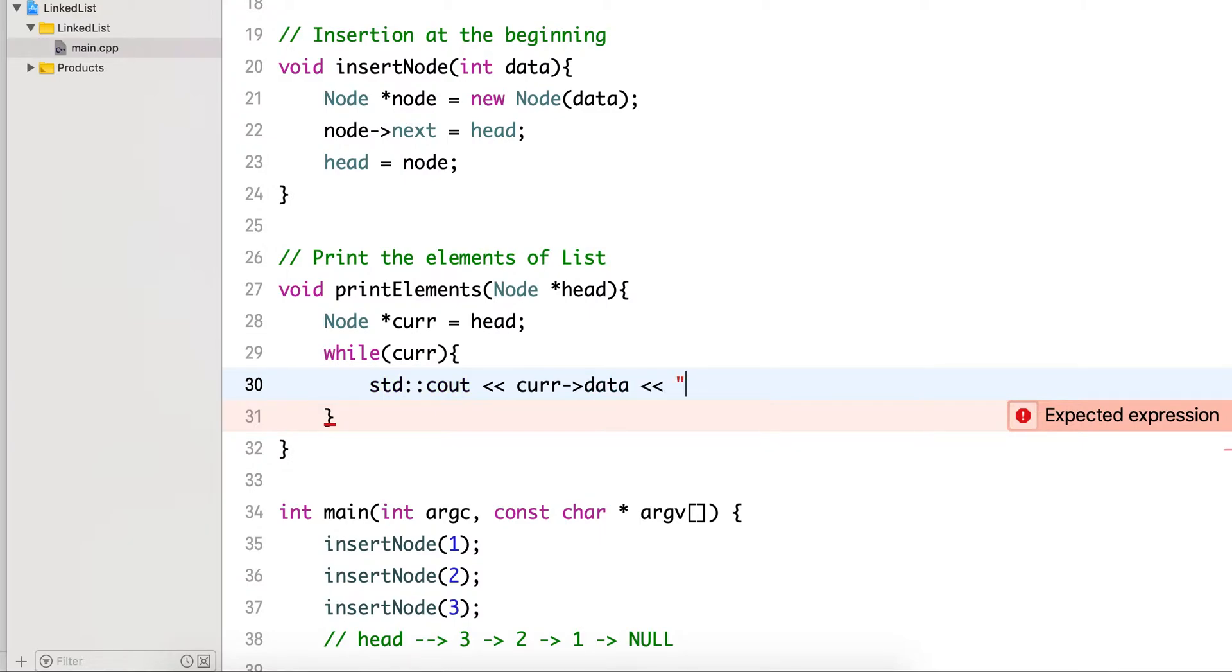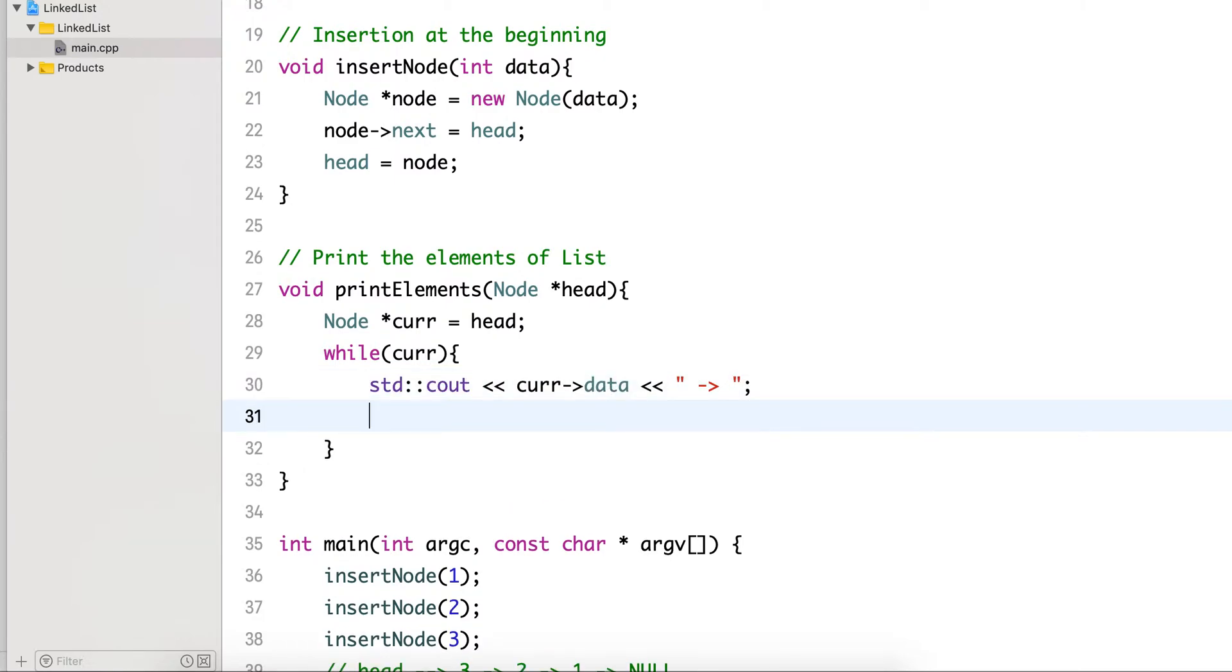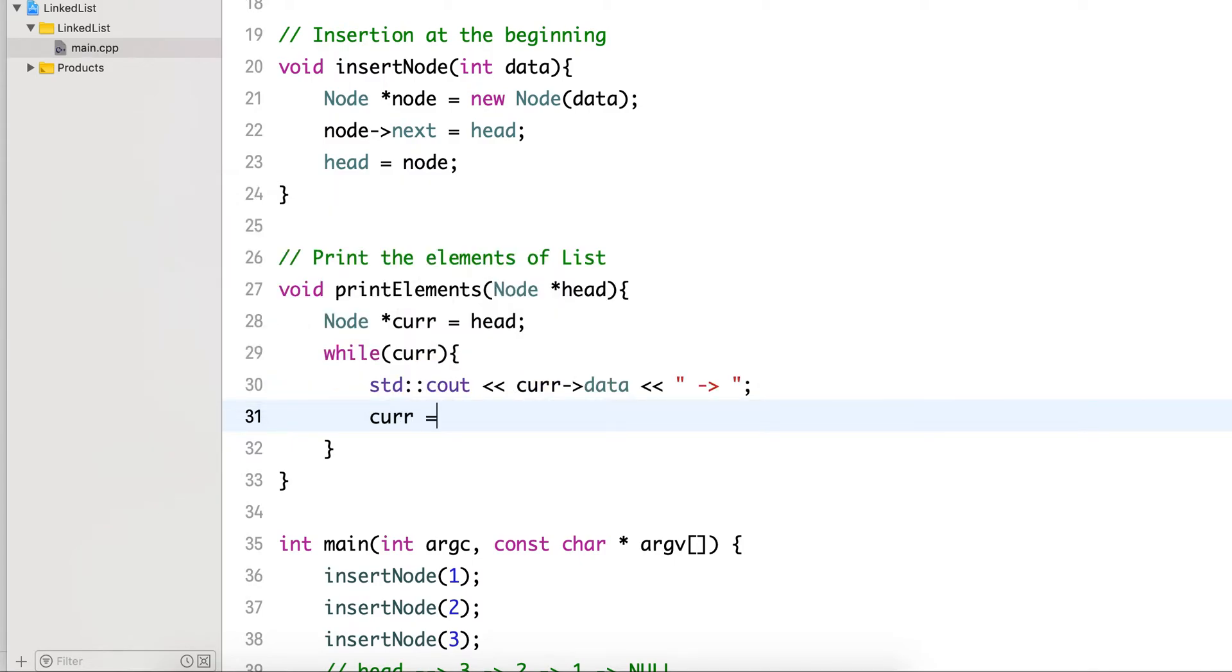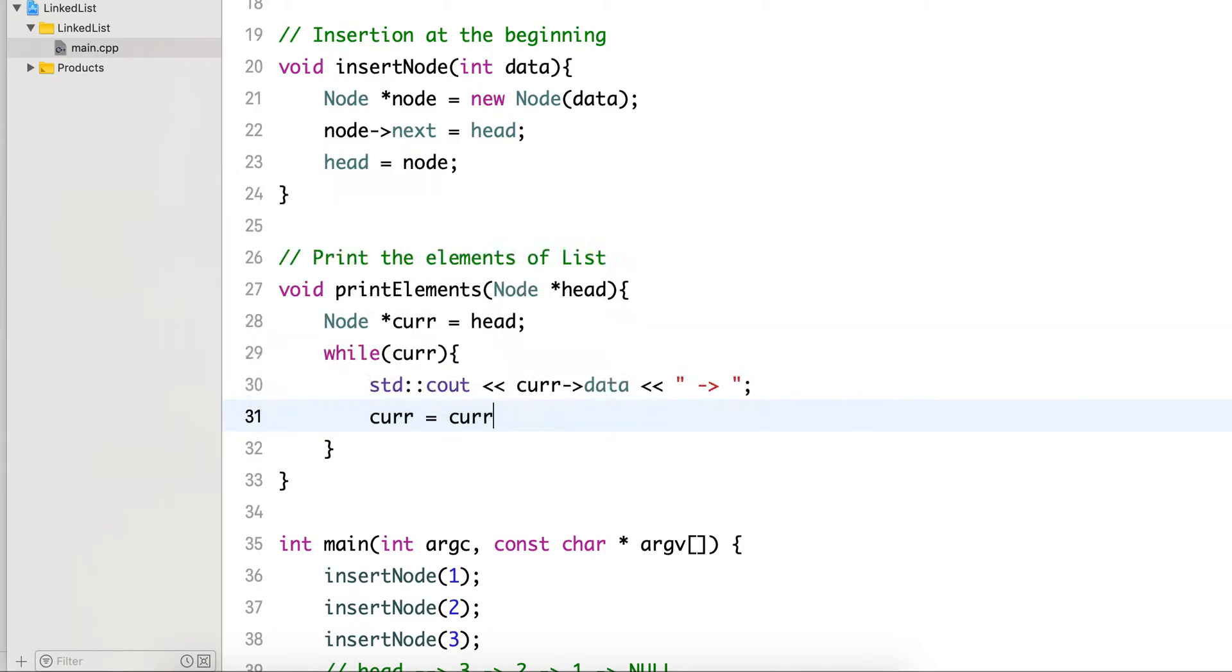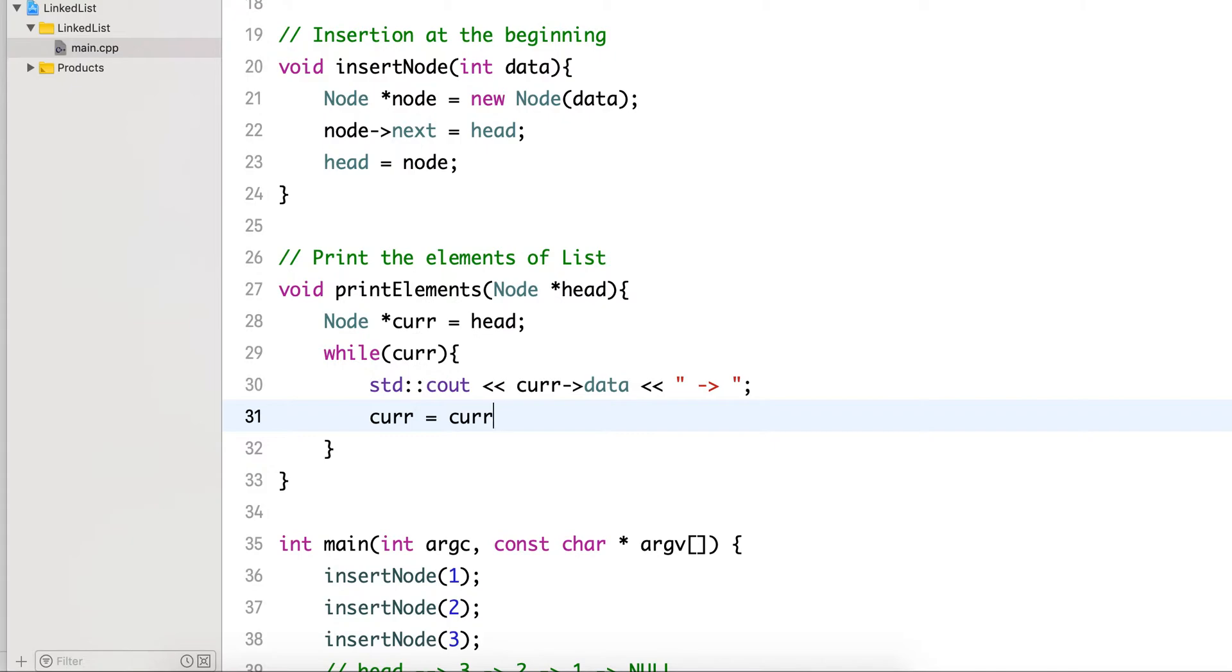To separate the elements, I will use this arrow to make it more visually correct. So it will keep printing the data and update the current to next, and in the end it will add arrow after the last element also.